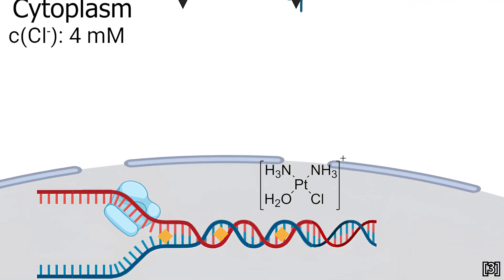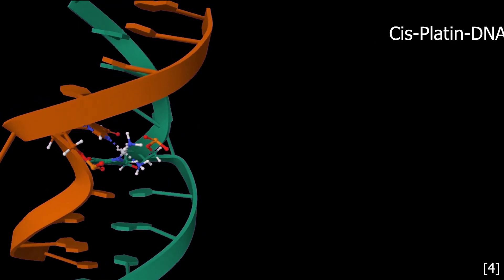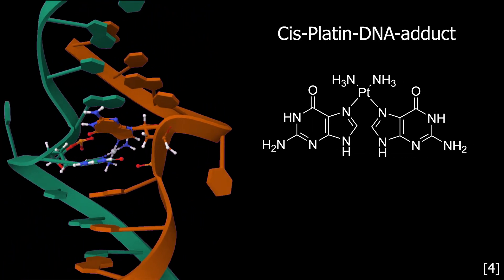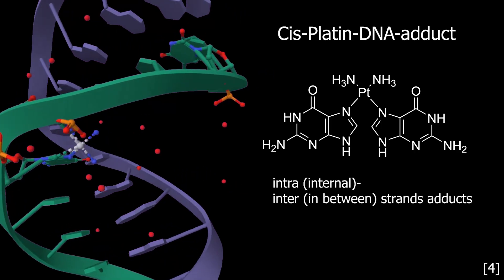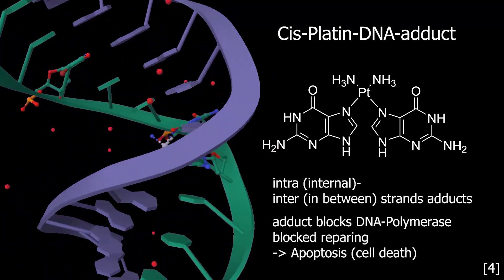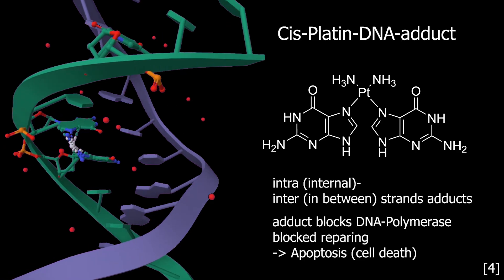Once inside the cell, cisplatin can form adducts with various molecules, including proteins, RNA types, and DNA. The platinum atom can coordinate to the N7 position of guanine or adenine, forming inter- and intrastrand crosslinks. These crosslinks can block transcription or replication, ultimately leading to cell death.